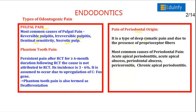Pain of periodontal origin is a type of deep somatic pain, due to the presence of proprioceptive fibers. The most common causes of periodontal pain are acute apical periodontitis, acute apical abscess, periodontal abscess, pericoronitis, and chronic apical periodontitis.